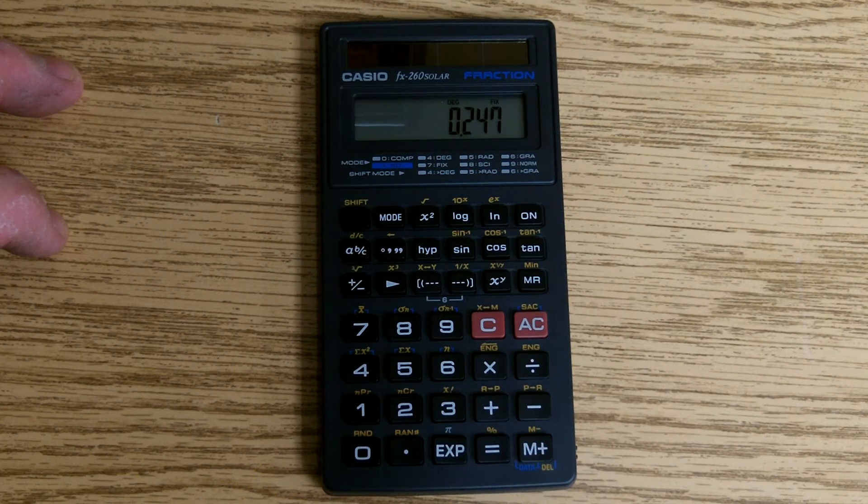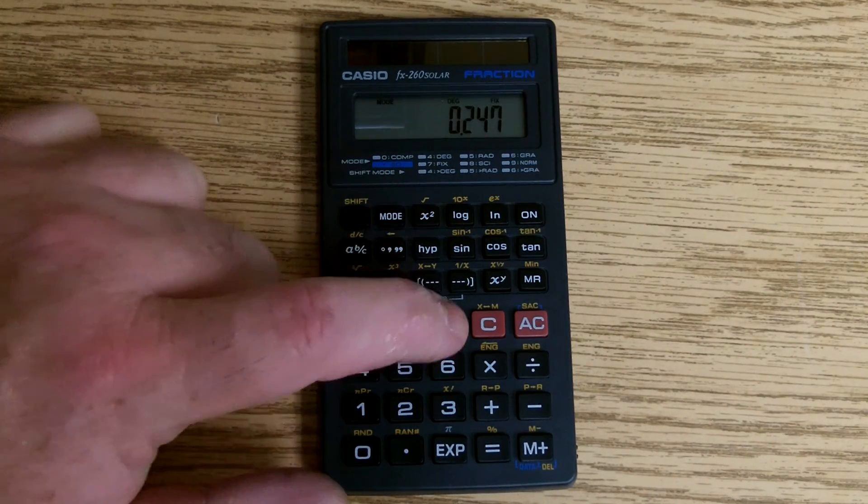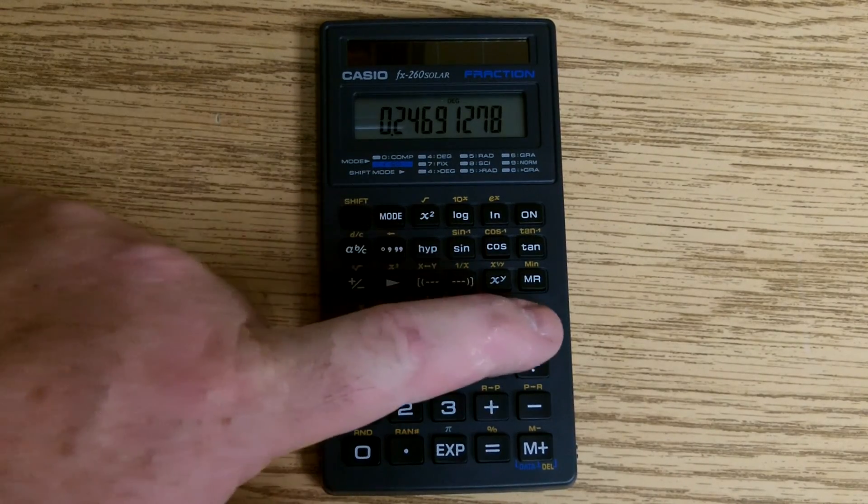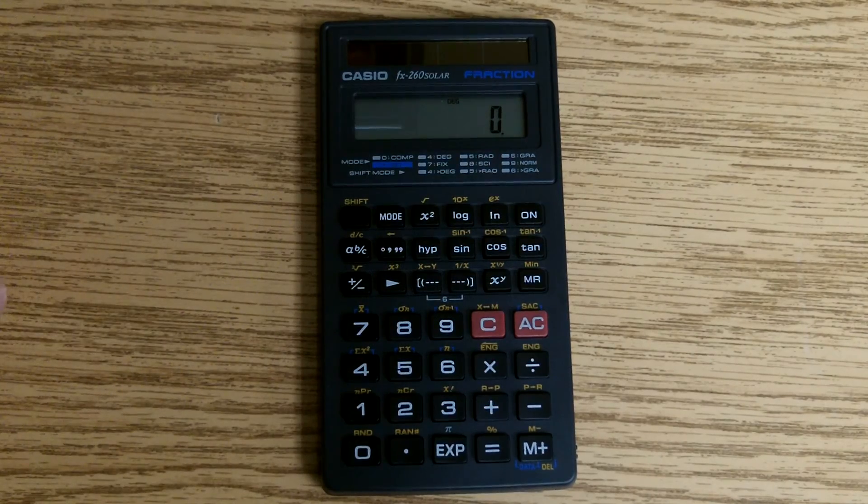If you want to remove that, mode 9, which is the normal mode, and that removes the fixed.